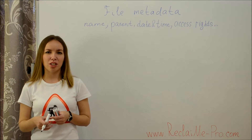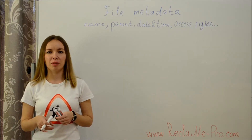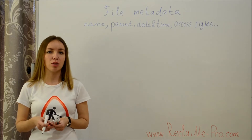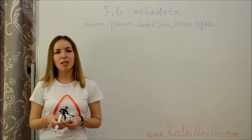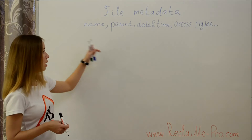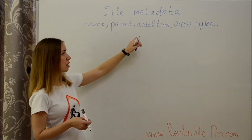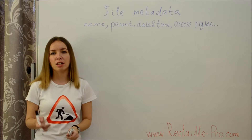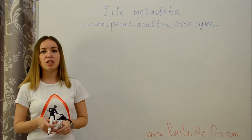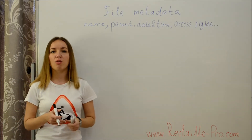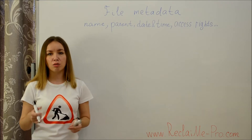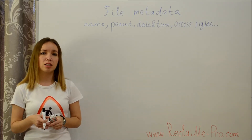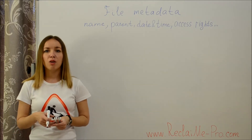Welcome to the ReclaiMe channel. Today we talk about file metadata. Metadata is a description of the file which is not a part of the file. Metadata usually includes file name, parent directory, date and time of file creation, access rights, file size, and other attributes. Additionally, the location of file content on a disk is also metadata, although this information is often considered separately.